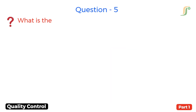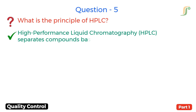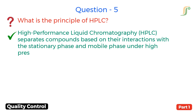Question 5. What is the principle of HPLC? Answer. HPLC separates compounds based on their interactions with the stationary phase and mobile phase under high pressure.